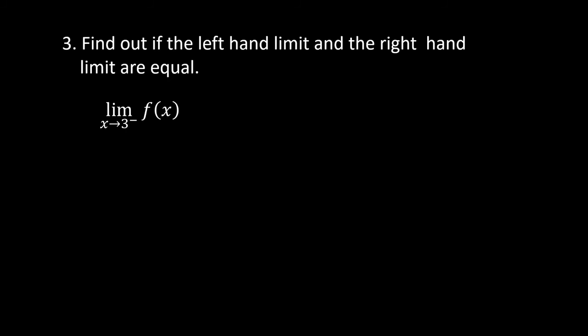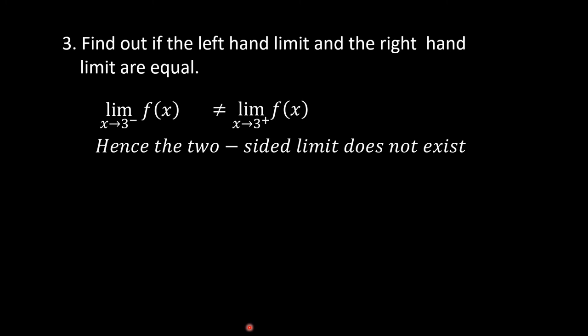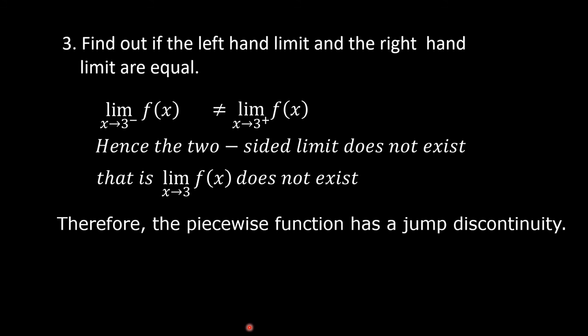Number 3: find out if the left-hand limit and the right-hand limit are equal. The limit of f(x) as x approaches 3 from the left equals 1, and the limit of f(x) as x approaches 3 from the right equals 3. Since they are not equal, the two-sided limit does not exist. That is, the limit of f(x) as x approaches 3 does not exist. Therefore, the piecewise function has a jump discontinuity.